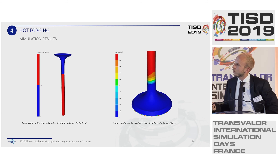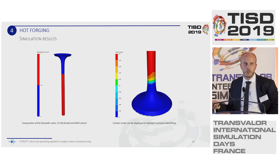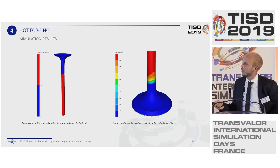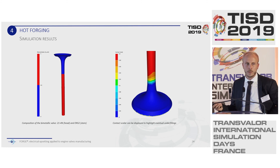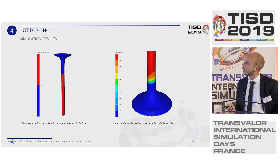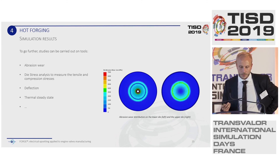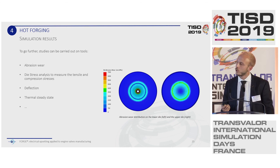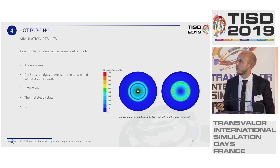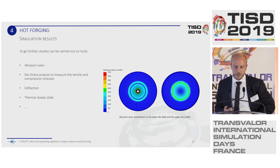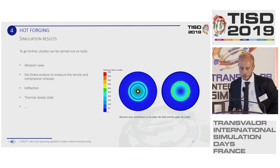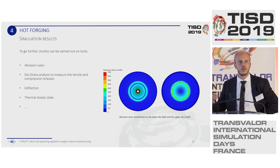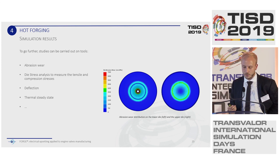In the post-processing, you can also analyze where both materials are located using the material sets analysis. You can display the contact to see any potential underfilling. This is a flashless operation — there is no flash at the end. If you want to go further, there are tools in FORGE to analyze the dies, such as abrasive wear, tensile and compressive stress in the dies, deflection, and thermal steady-state calculations to see the die temperature after a number of parts.